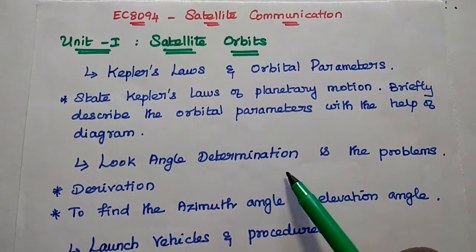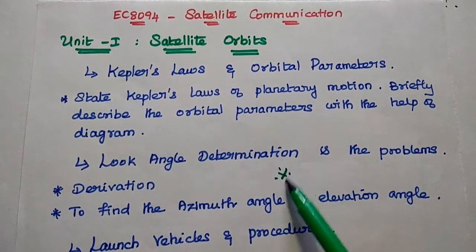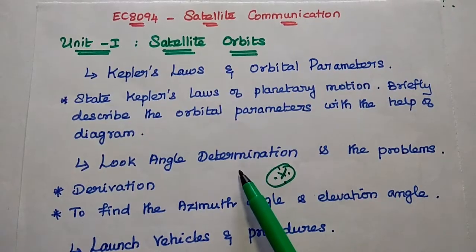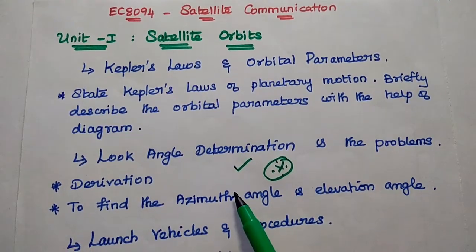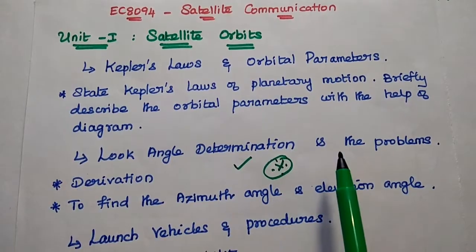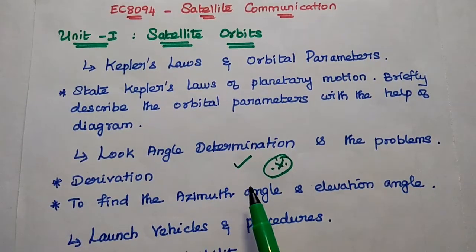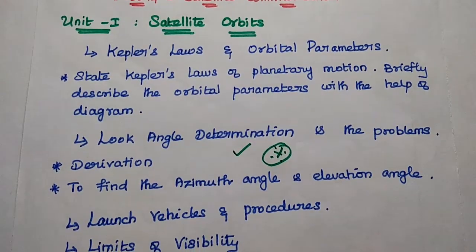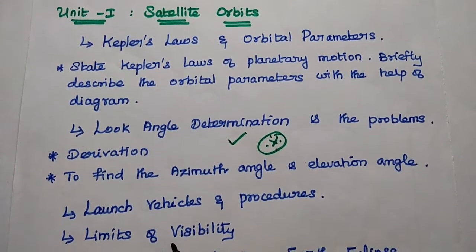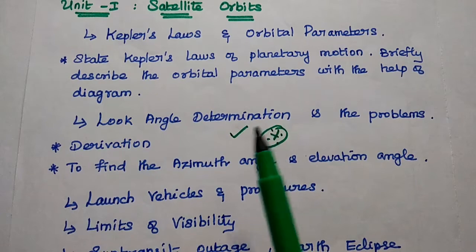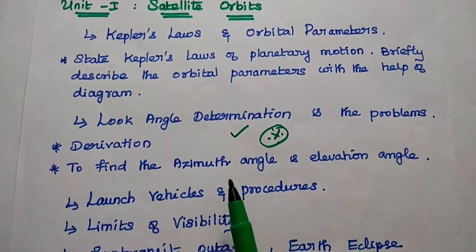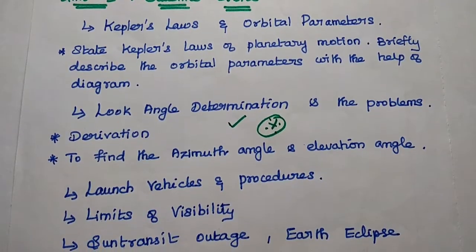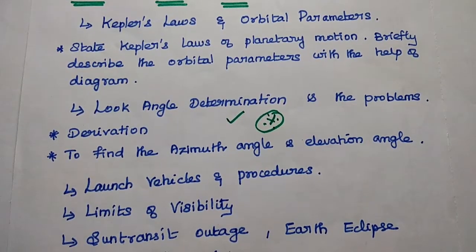The next important topic is look angle determination. This topic is very important — definitely there will be one question from this topic, along with relevant problems. The question may be to calculate the azimuth angle and elevation angle for the given data. Look angle determination and its relevant problems are very important and expected from the first unit.